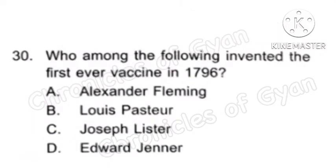Question 30: Who among the following invented the first ever vaccine in 1796? The correct answer is Option C, Edward Jenner, and the vaccine was the smallpox vaccine.